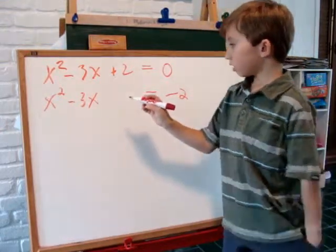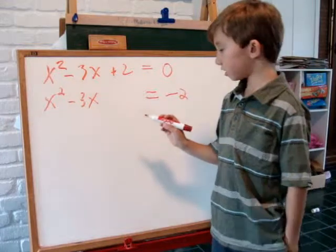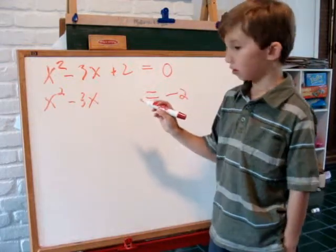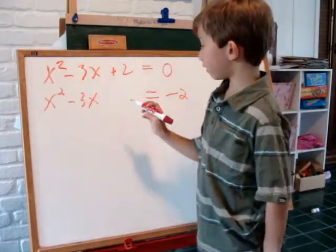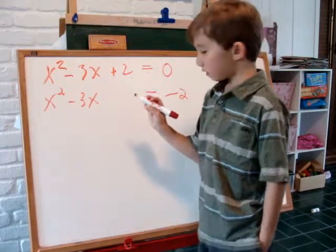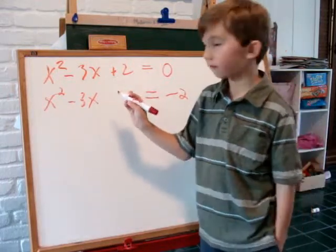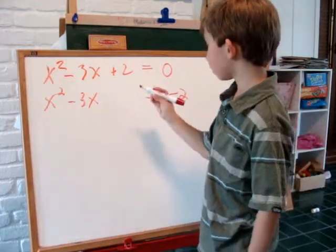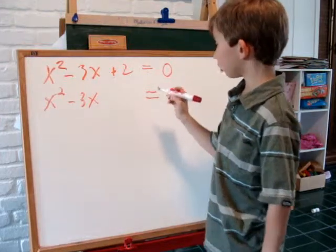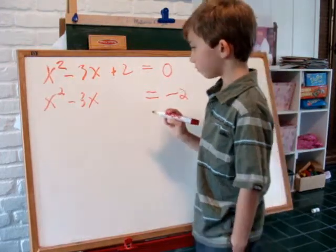Now we look at the coefficient of x, which is negative 3. We have it. We square it. And we add that number to both sides of the equation.